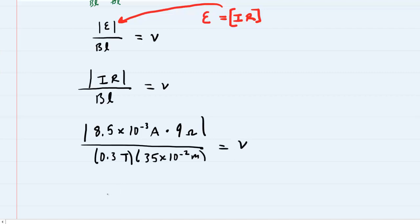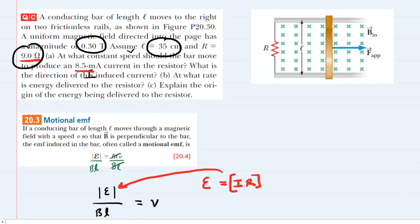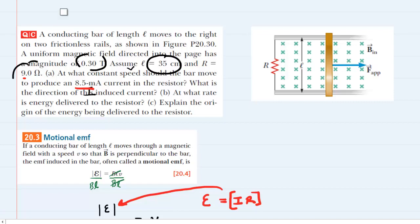We'll pick up our calculators, we'll punch this in, and when we do that we get about 0.73 is equal to the speed. You recall from physics 1 that speed is measured in meters per second. So this would be the correct answer to the first part of part A. There was a second part to part A.